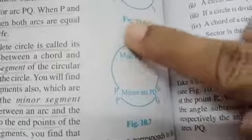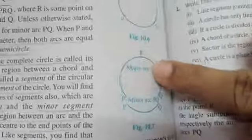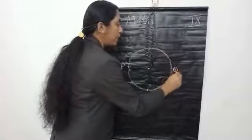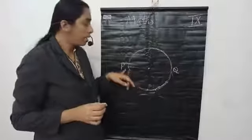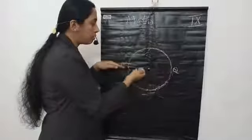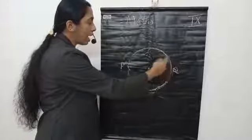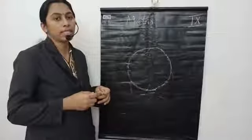In your textbook, page 170, figure 10.7: this longer arc is the major arc and the shorter one is the minor arc. If we take two points on the circle at the ends of the diameter, this circle divides into two equal parts — this part is known as semicircles. The circle is divided into two equal parts and both arcs have the same measurement; both parts are known as semicircles.